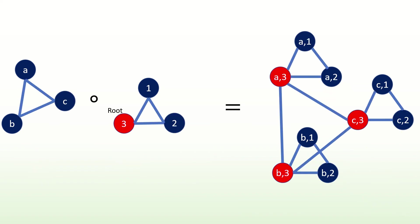The reason why the rooted product of acyclic graphs is acyclic is that cycles in a rooted product are either entirely contained in one of the copies of the second input graph, or entirely contained within the single copy of the first input graph. The green cycle highlighted is one entirely within the first copy of the second input graph, and the red cycle highlighted is one entirely within the single copy of the first input graph. If neither input graph had cycles, the product graph would have no cycles. This is unlike the Cartesian product, as the Cartesian product of two acyclic graphs could have cycles.